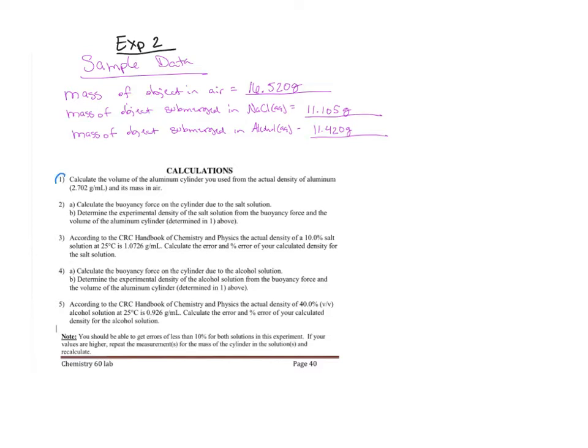We'll start by looking at calculation number one. Make sure in your calculations in your notebook, you clearly write out and number each question you're answering, show all of your work, include units, report your answers in their correct number of significant figures, and put a box around your final answer so it's easy for me to grade.